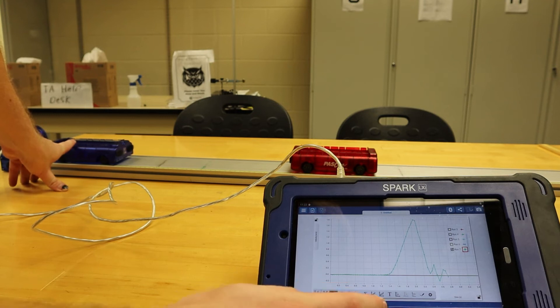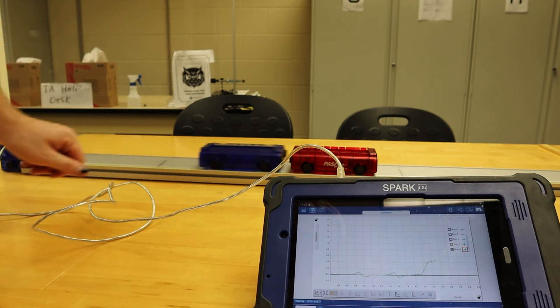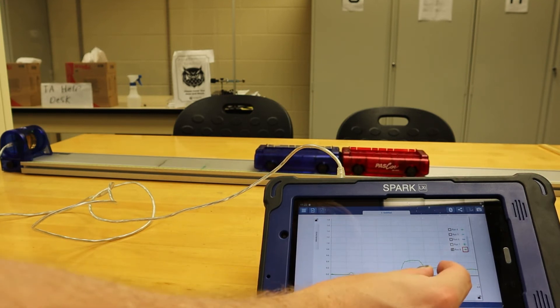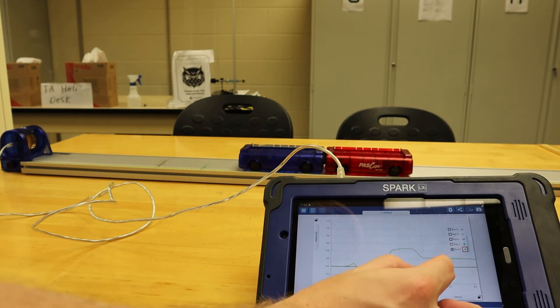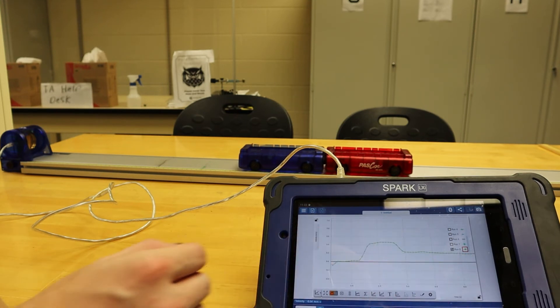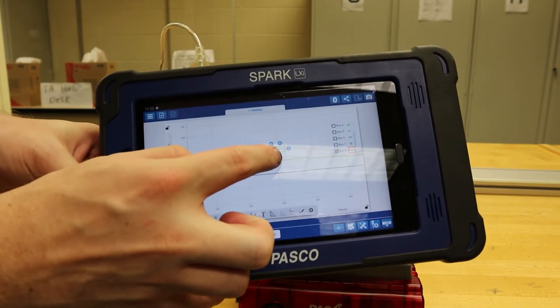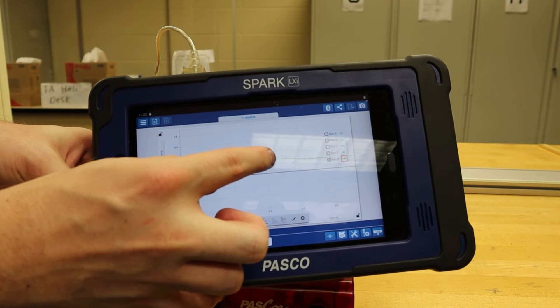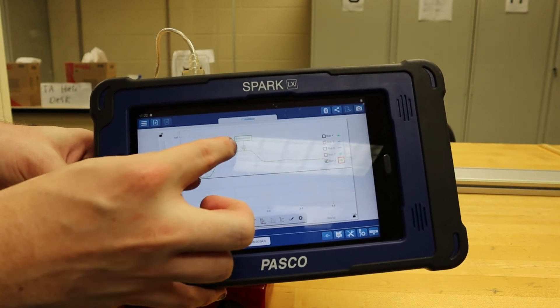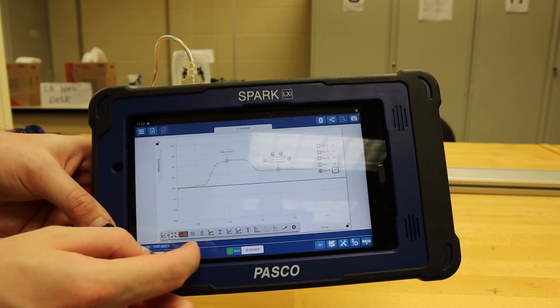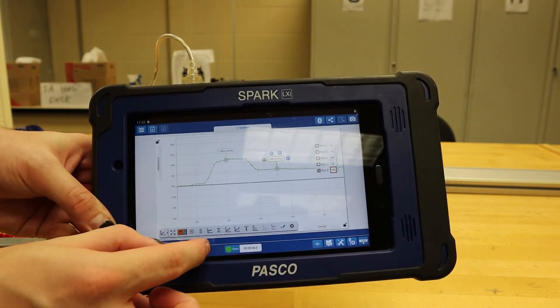With everything set up, we will press start on the LXI, then gently slide our blue passcar into the red and press stop shortly after they collide. We will then record the initial and final velocity of the collision. The initial velocity should be at the top of the plateau, while the final velocity will be at the straight line just to the right of the plateau.